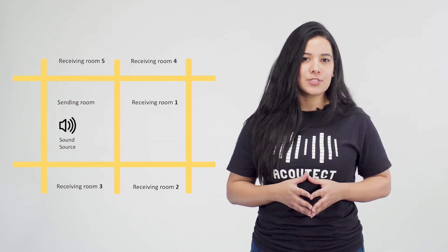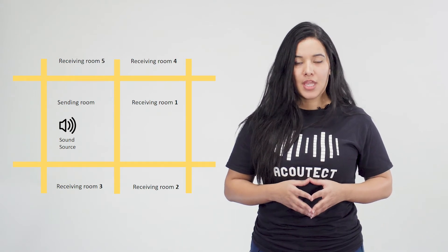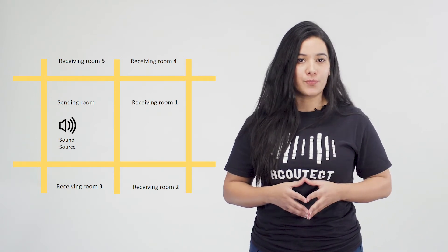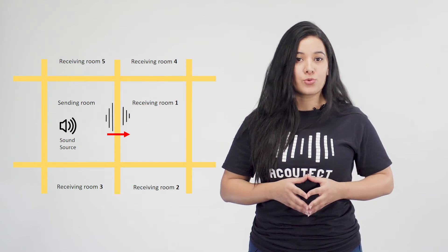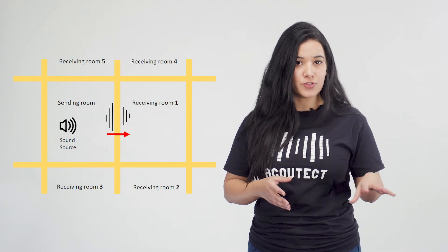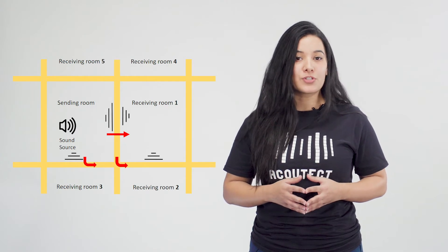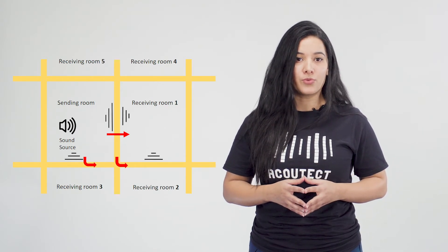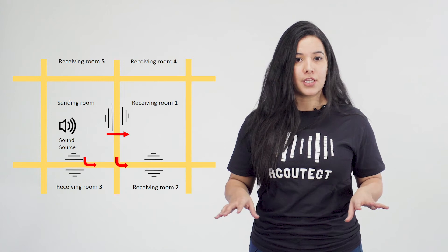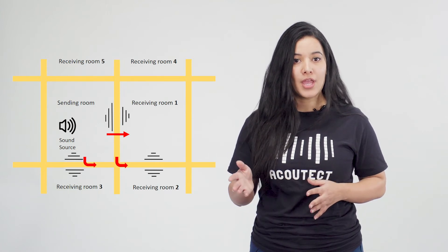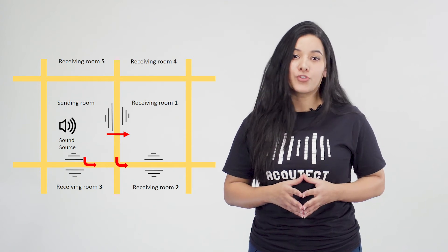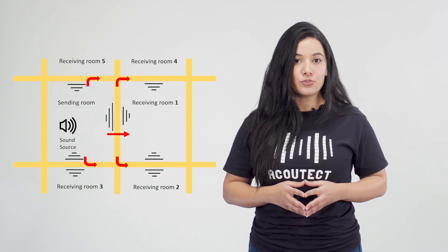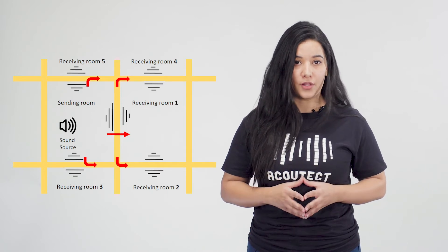To give you a simple illustration of this, let's look at this multi-story floor plan. Assuming that we have an emission room causing noise, vibration will not only radiate into the receiving room 1 via direct transmission — these will also be transmitted through the structure downward and radiate through the ceiling in both receiving rooms 2 and 3. This flanking transmission will also occur upward, resulting in sound radiation in receiving rooms 4 and 5 as well.